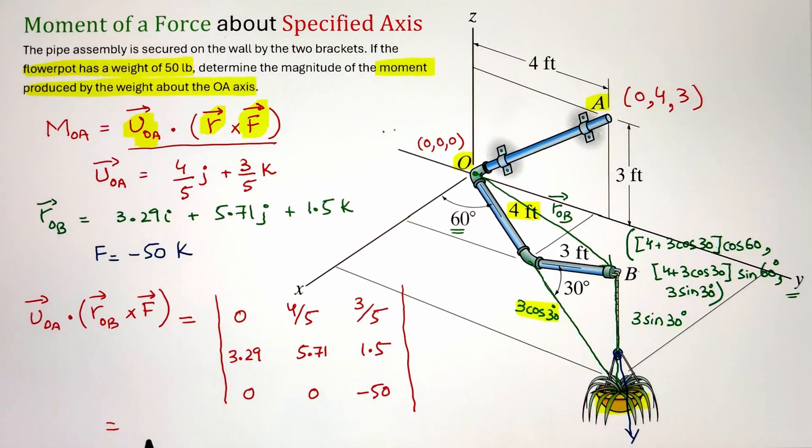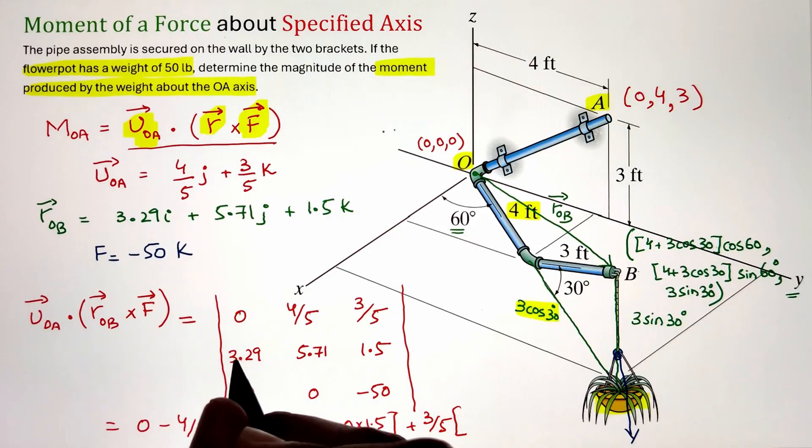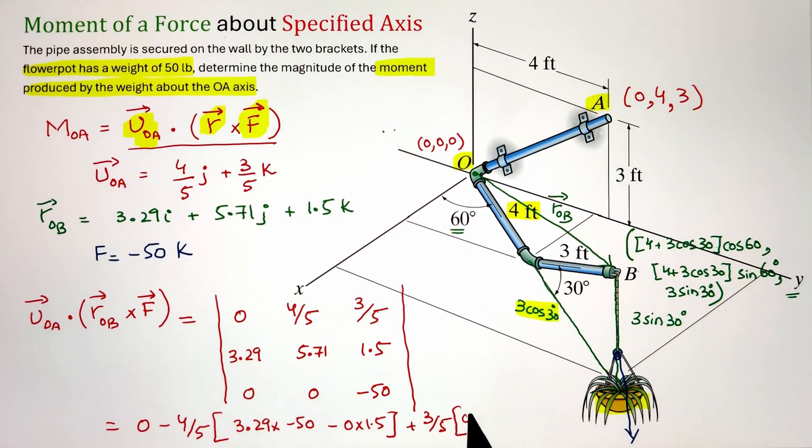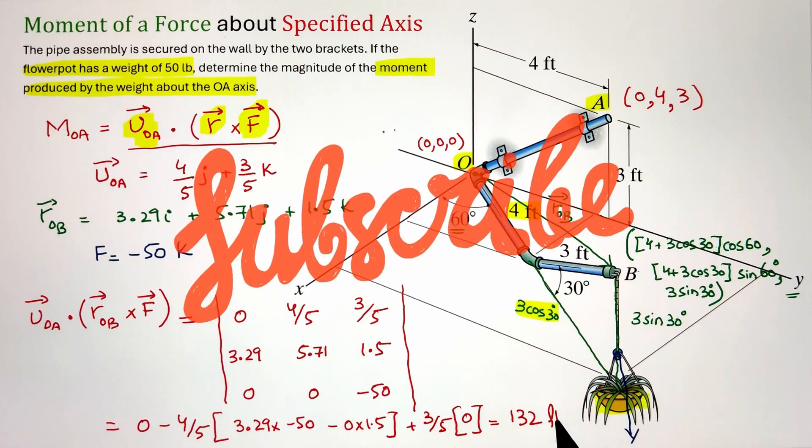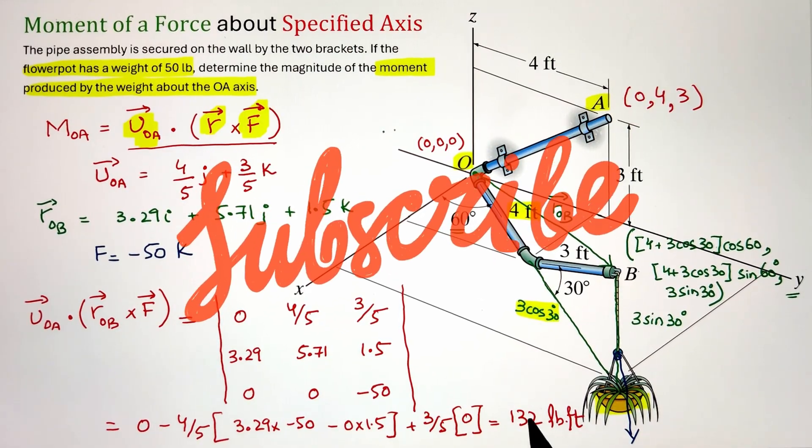So the whole very first term of cofactors will become 0. After that I have negative 4 over 5 that is being multiplied by 3.29 times negative 50 minus 1.5 times 0. And finally I have plus 3 over 5, this term is being multiplied by 3.29 times 0 subtracting 0 with 5.71. So the third term will also equal 0. Simplifying we get our final value as 132 pound feet.